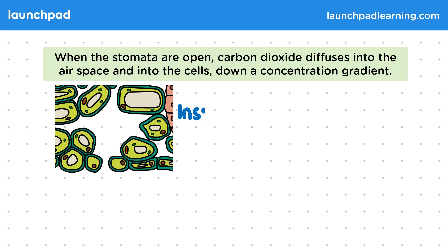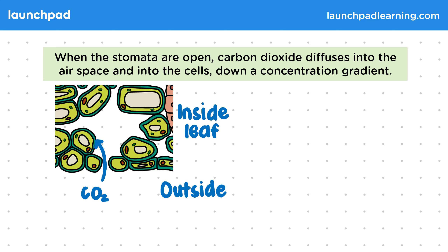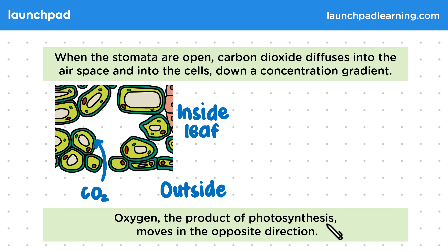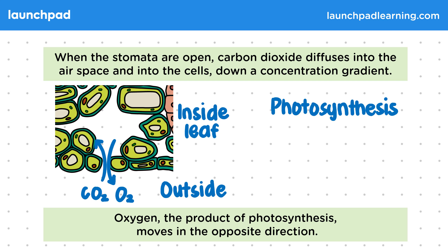In this diagram, you can see the inside of the leaf in this area and the outside beyond these cells. Carbon dioxide moves from an area of high concentration to an area of lower concentration inside the leaves, as CO2 is being used for photosynthesis within the leaf. Oxygen, the product of photosynthesis, moves in the opposite direction. So as CO2 moves in, oxygen moves out. Remember that in photosynthesis, carbon dioxide goes into the system and then oxygen comes out as a waste product.